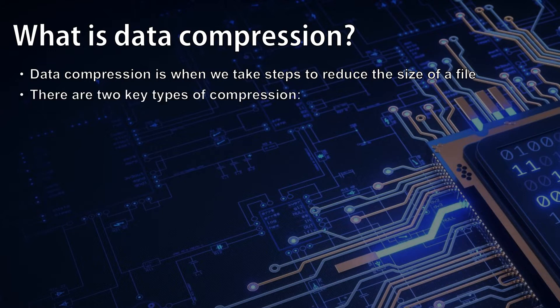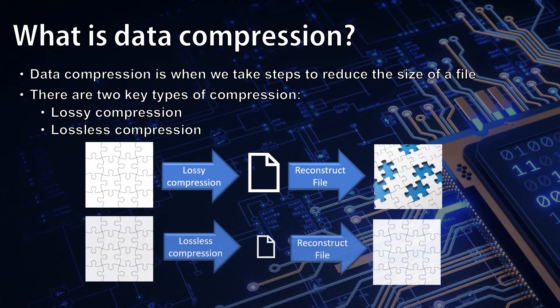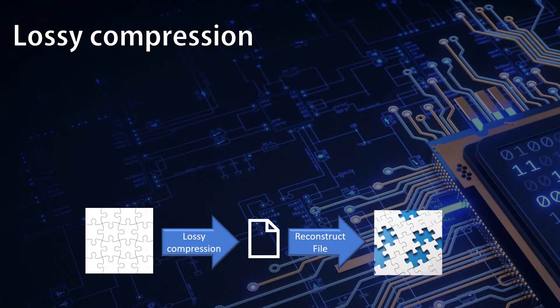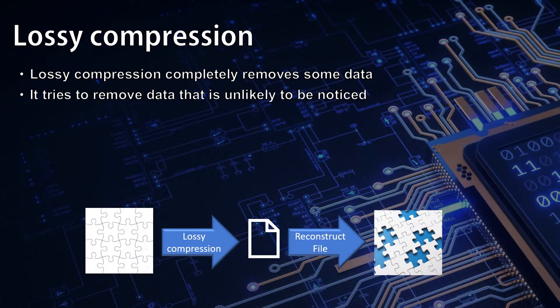There are two key types of compression: lossy compression and lossless compression. Lossy compression, as its name implies, completely removes some of the data from the file that it compresses. It tries to remove data that is likely to be unnoticed.